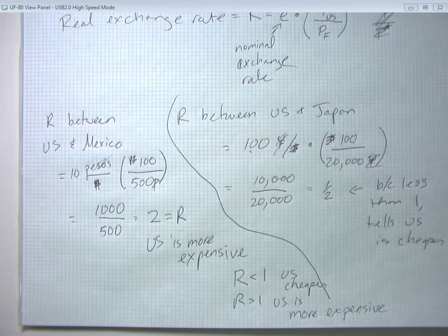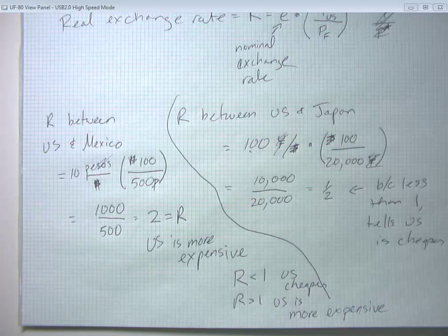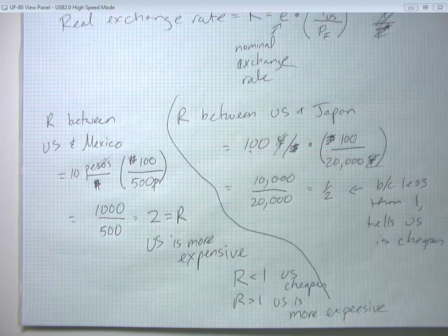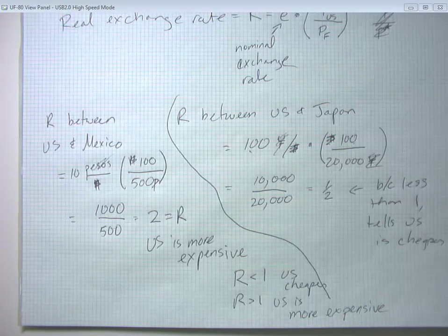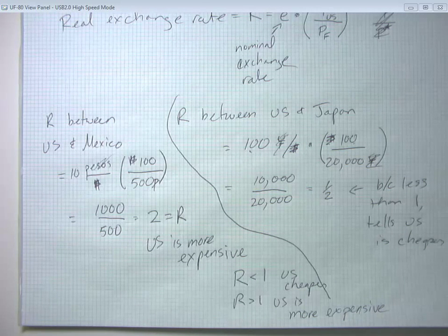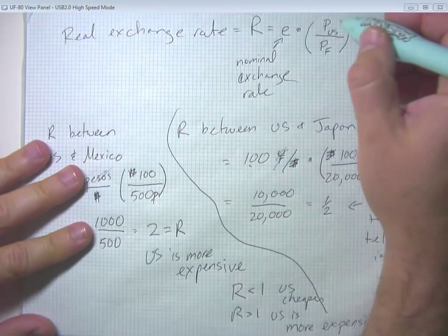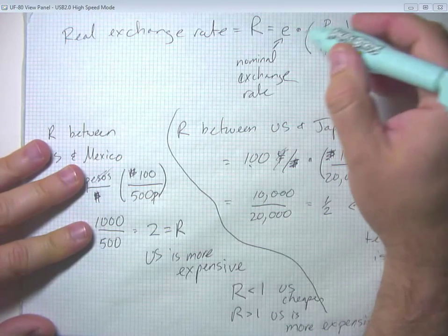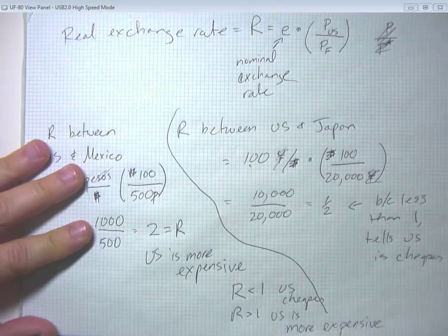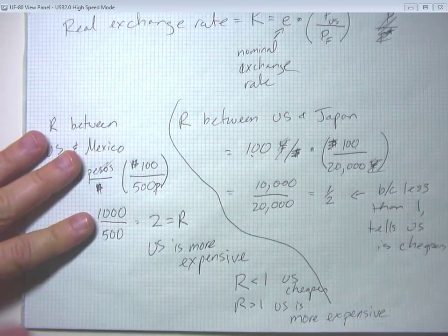And you can see how the real exchange rate is the one that's going to most influence where people want to buy things. Because people don't just take the exchange rate into account, and they don't just take the price into account. They take all three things into account, the exchange rate and the relative prices. So the real exchange rate produces a summary there.